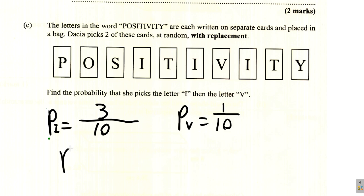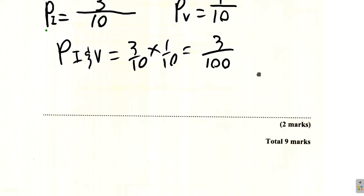Now, the probability that she picks I and V. You multiply these. If it had said or, you would add them, but it's and, you multiply them. 3/10 times 1/10 gives you 3/100. So that would be the probability of picking an I and then a V.